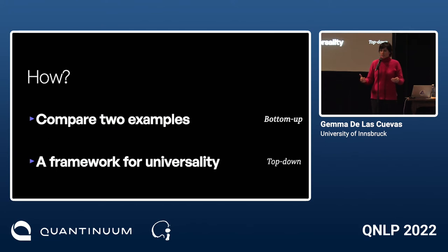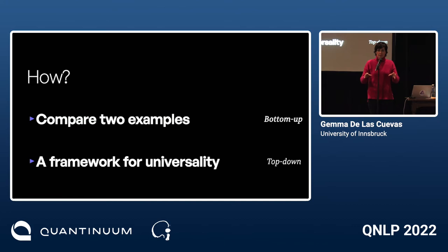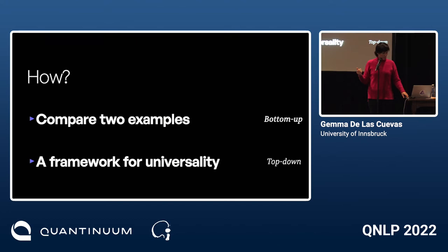One is to compare two examples — spin models and Turing machines — a bottom-up approach. The other is to propose a framework for universality and try to see how different examples fit in it, ideally giving us grades of universality to compare things rigorously — a top-down approach.